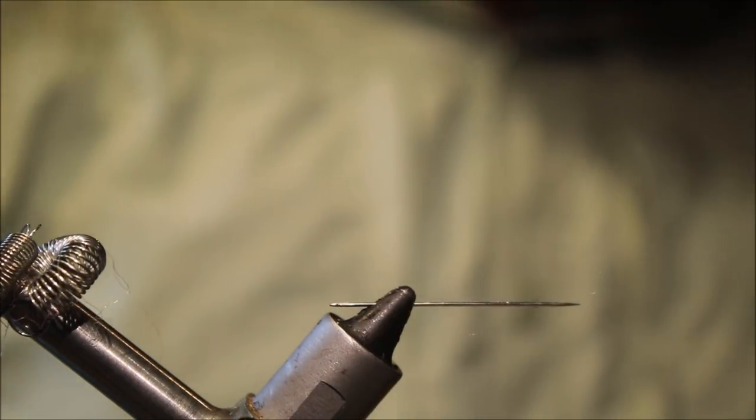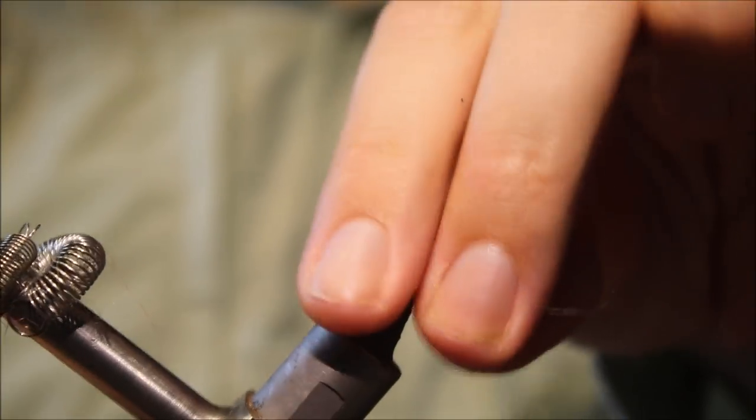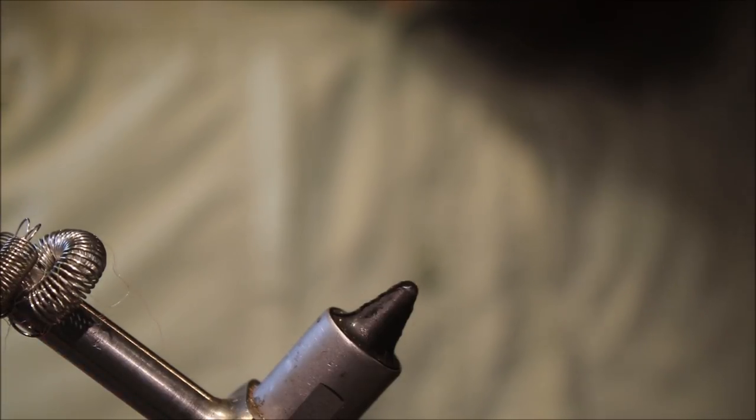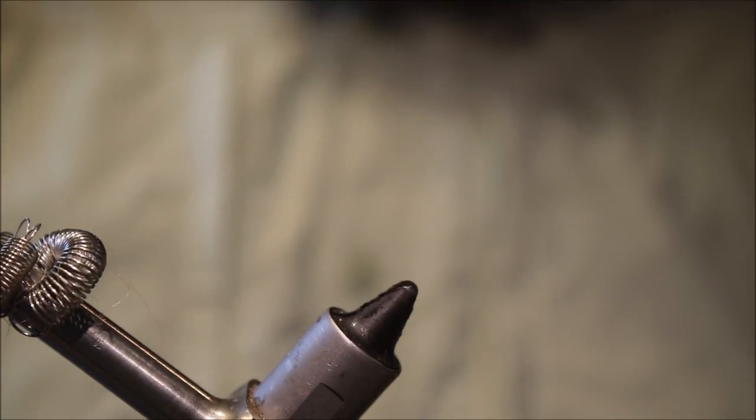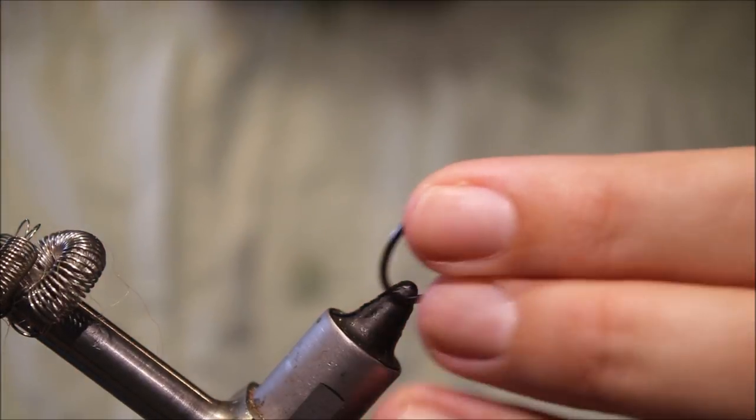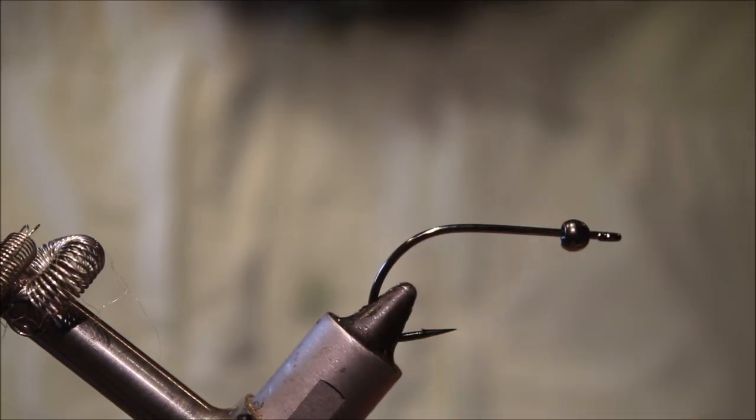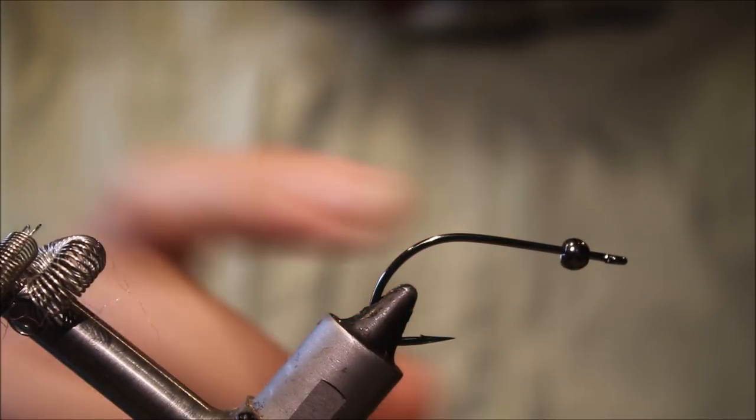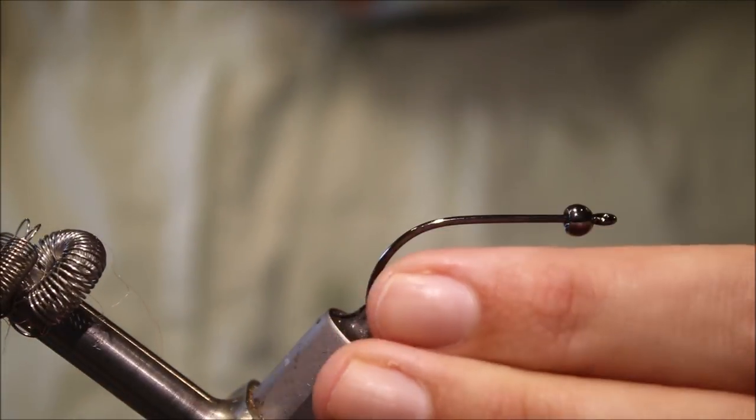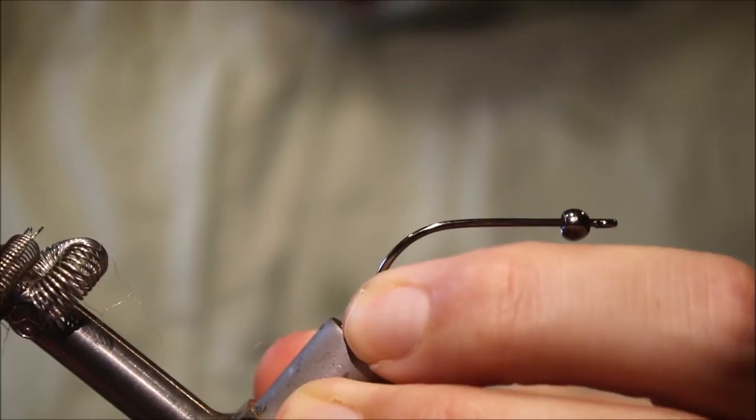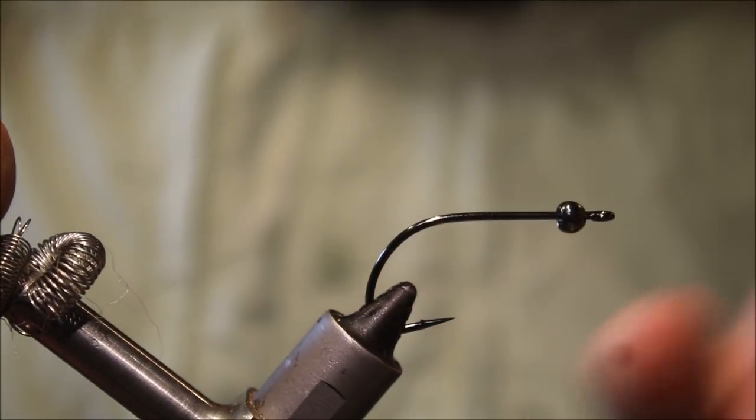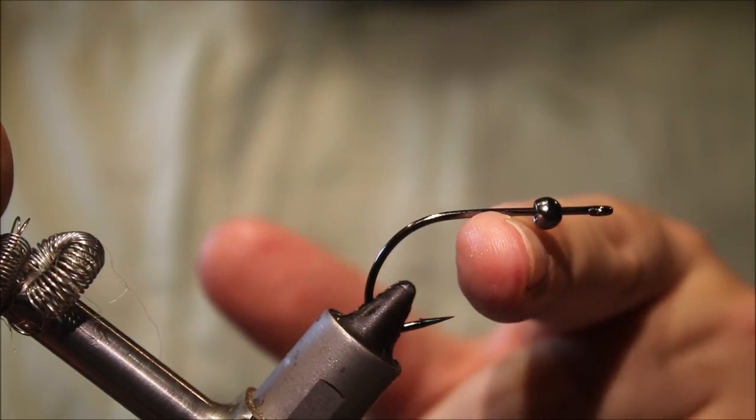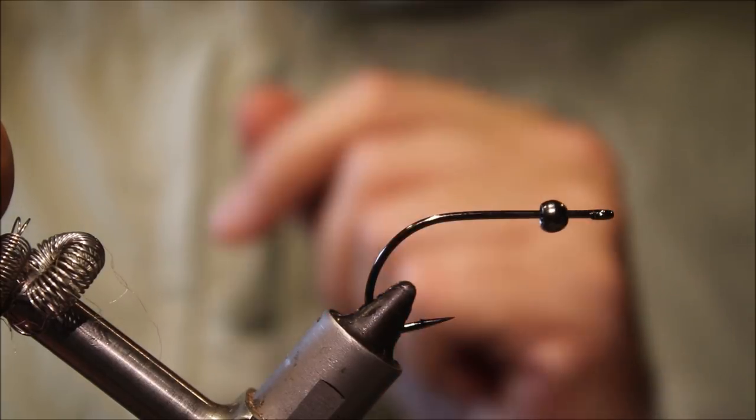Normally I would make half a dozen or whatever tails, and then carry on. So, come to the hook, this is a Gamakatsu B10S, size 1 for this size of worm. Obviously you can adjust the size to suit the size of worm that you want to tie. And I've got a five mil tungsten bead.